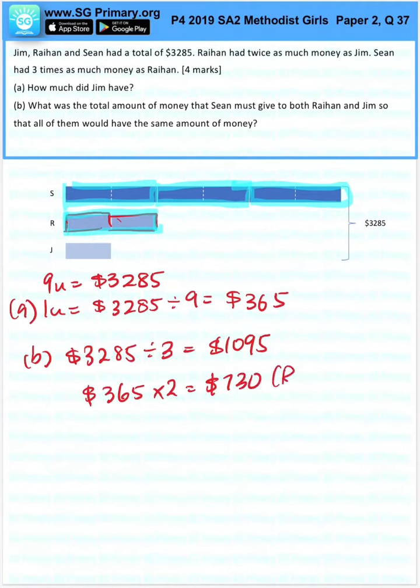This is what Raihan has now. So the amount that he needs is $1,095 minus $730, which will give us $365.